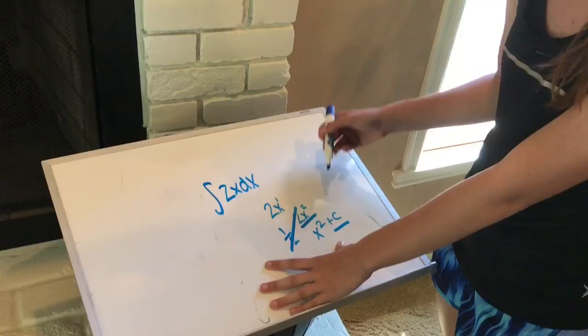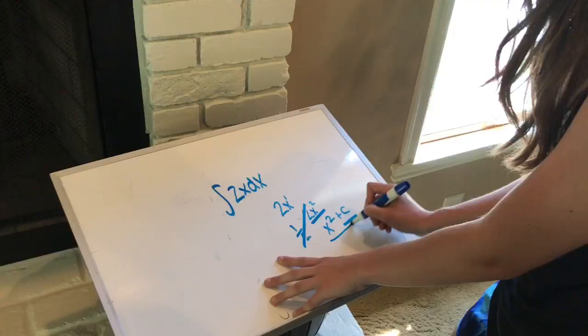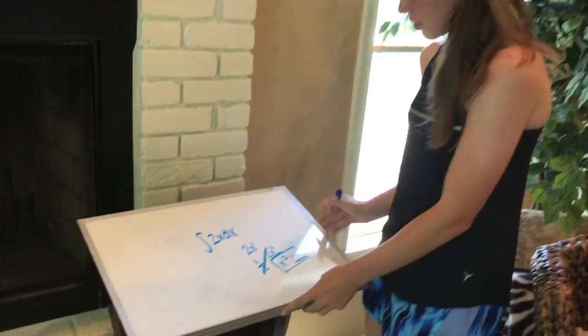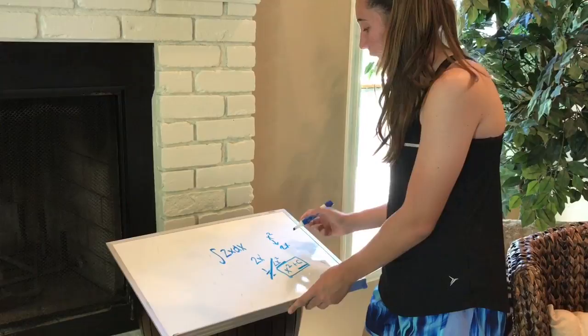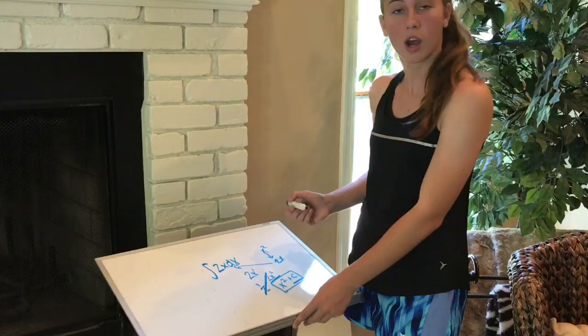Now, the answer is x squared plus c, and if we want to just check if our answer is correct, then we could just find the derivative of x squared, which is 2x, and we see, ta-da! It's the same. So, therefore, you can always know if you're doing anti-derivatives right. Okay, that was pretty easy. Good! That's awesome!